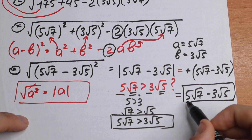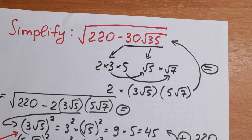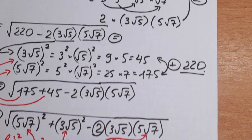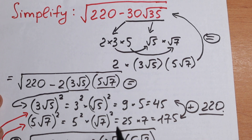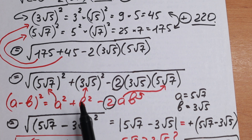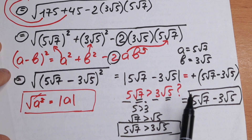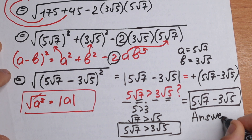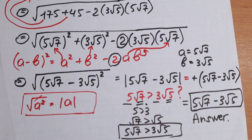So, to summarize, after all steps we get the final answer: 5√7 minus 3√5. The key steps were: first, creating a perfect square inside the radical; then recognizing the (a − b)² formula pattern; and finally using the absolute value rule to simplify. I hope you understand this. If you don't, write your question in the comments. Thank you so much for watching and see you in the next video!